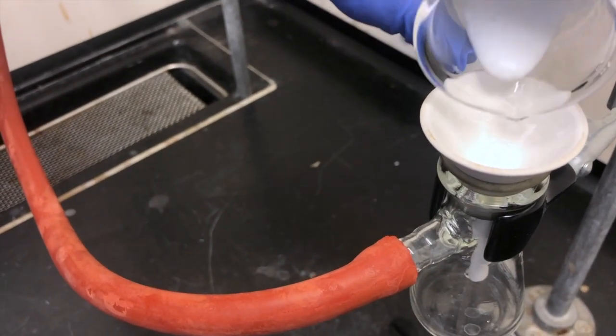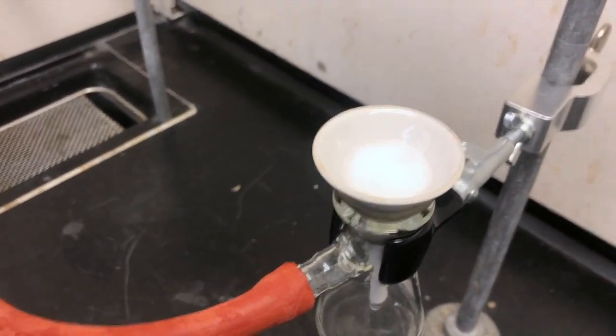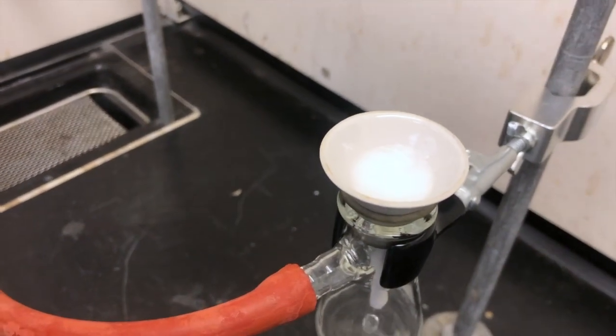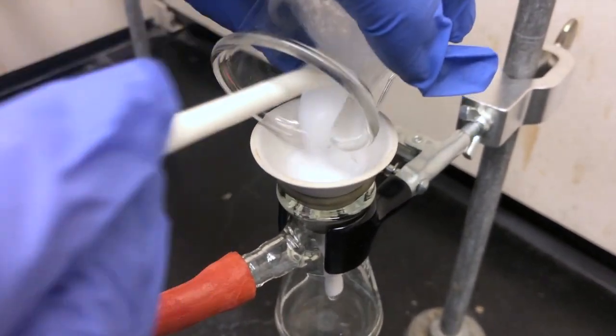Then we pour our mixture in and let it start to filter out the liquid from the solid, collecting our product on the filter paper in the Hirsch funnel.